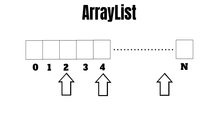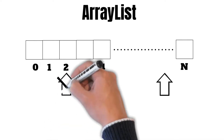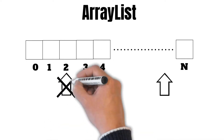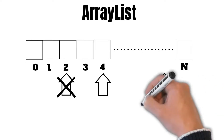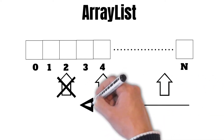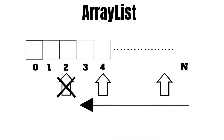The downside is that whenever we want to delete an element — suppose we want to delete element 2 from the ArrayList — all the remaining elements 3, 4, up to n will have to be shifted one place towards the left. So deleting something from an ArrayList is an expensive operation.